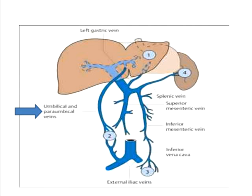In cirrhosis, the reason for dilated anterior abdominal veins is due to the reopening of what is called the para-umbilical vein. This para-umbilical vein connects the umbilicus to the left branch of the portal vein.